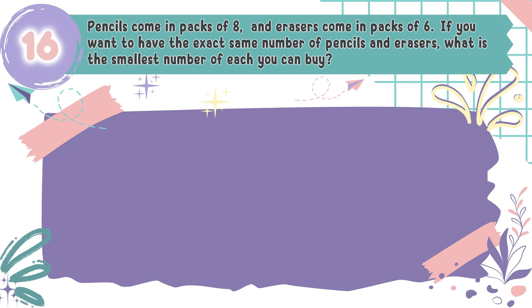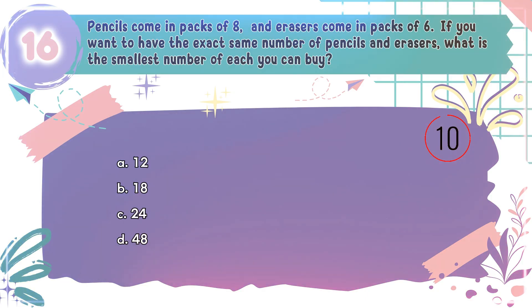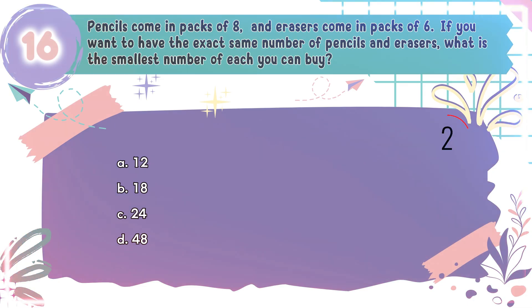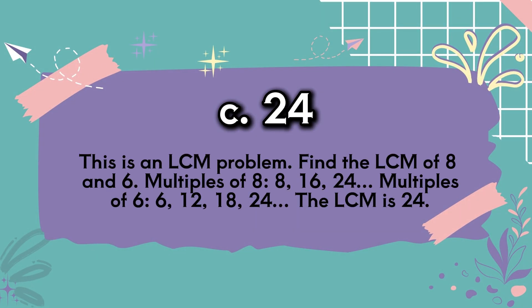Question number 16: Pencils come in packs of 8 and erasers come in packs of 6. If you want to have the exact same number of pencils and erasers, what is the smallest number of each you can buy? The choices are A: 12, B: 18, C: 24, D: 48. The correct answer is C, 24. Multiples of 8 and 6 — their least common multiple is 24.